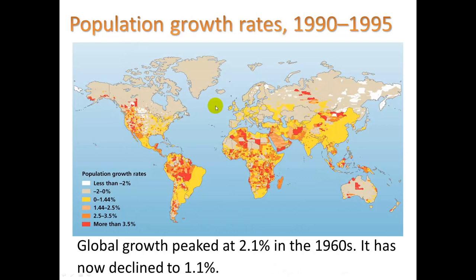Where is this growth happening the fastest? Where we see red are areas of greatest growth, and white and grey are actually declining. In South America and Africa we see large population growth rates. We see declining population growth rates in Europe — Spain, regions of France, Eastern Europe, Scandinavia, and large areas of the former Soviet Union. In the US, there is still high population growth in the southwest, and Canada is experiencing population decline in many regions as well.